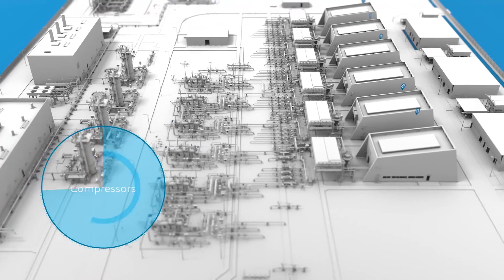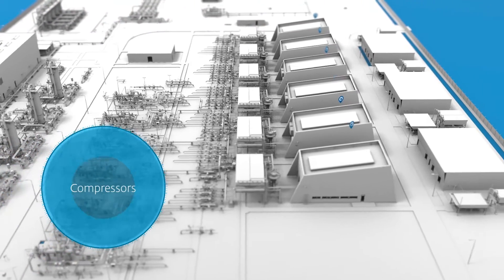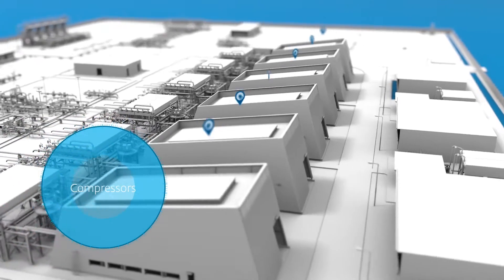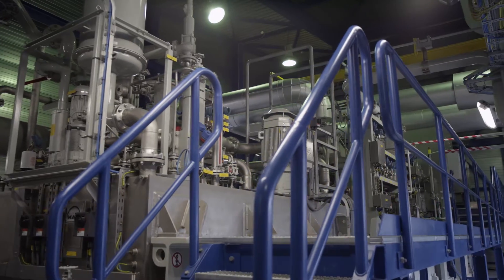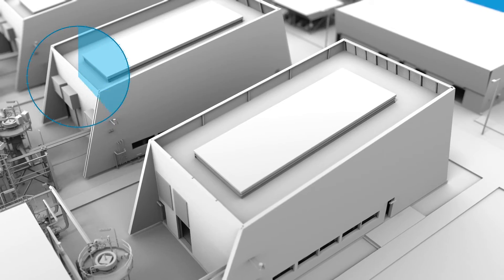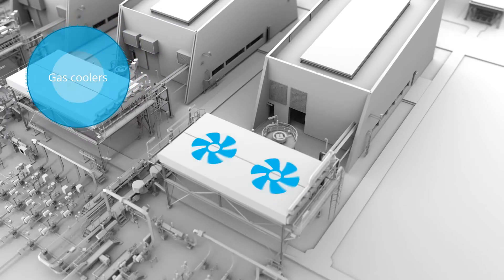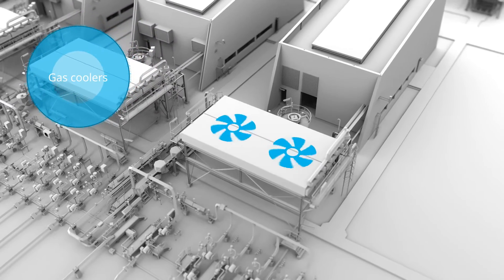When gas is injected into the cavern, it is compressed to between a minimum of 80 bar and a maximum of 180 bar. This is done using electrically operated compressors. The increase in pressure heats the gas to around 100 degrees centigrade, so it needs to be cooled before injection.